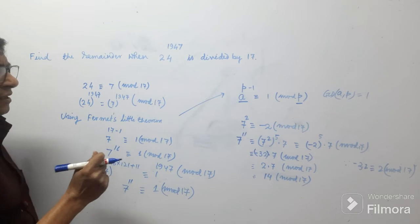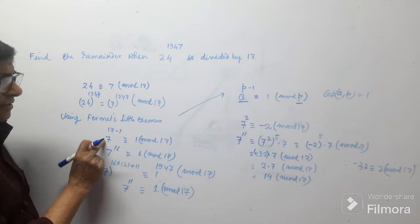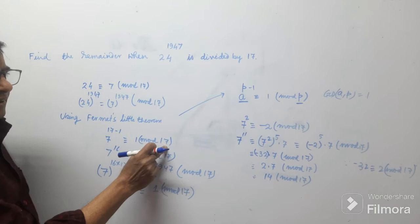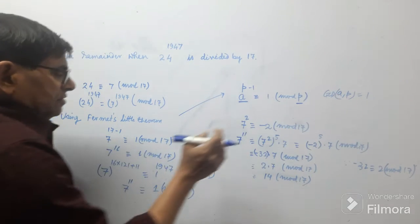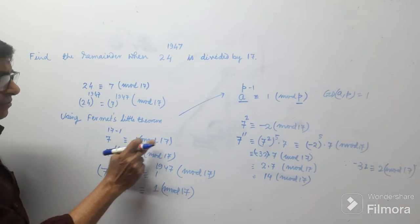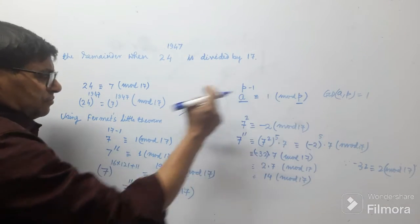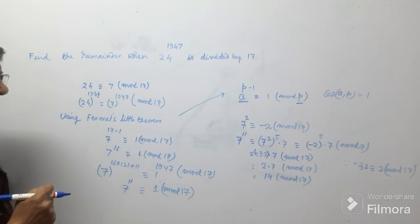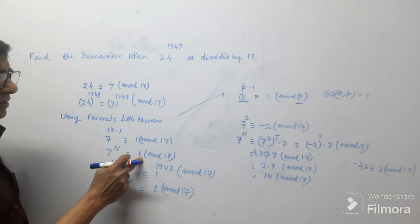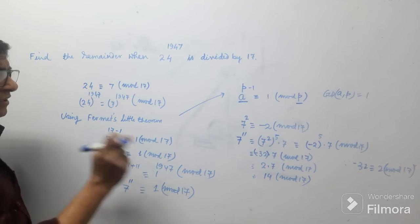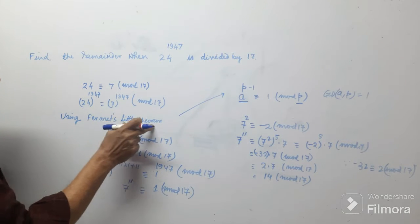According to this theorem, I put the value A = 7 and P = 17. So they are co-prime, which is verified. Now the remainder is 1, and the exponent is P minus 1, that is 17 minus 1 = 16. So 7 to the power 16 is congruent to 1 mod 17. This comes from Fermat's Little Theorem.